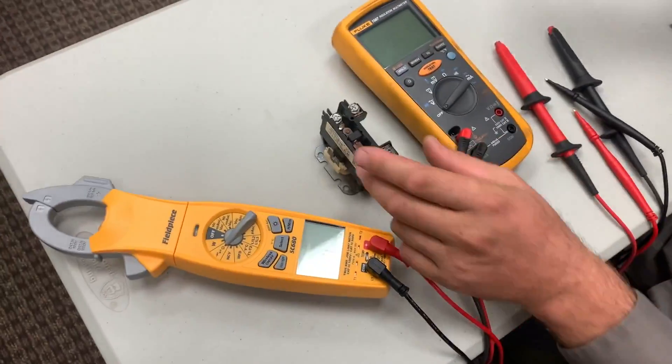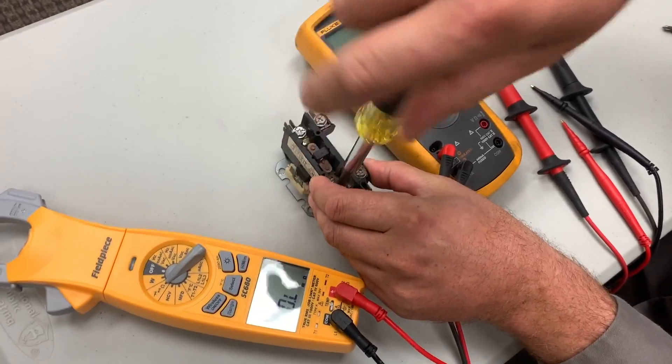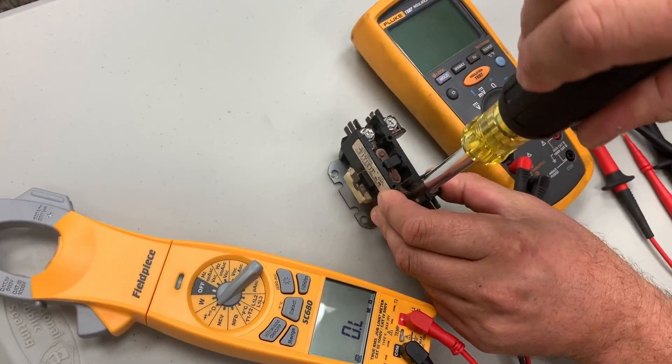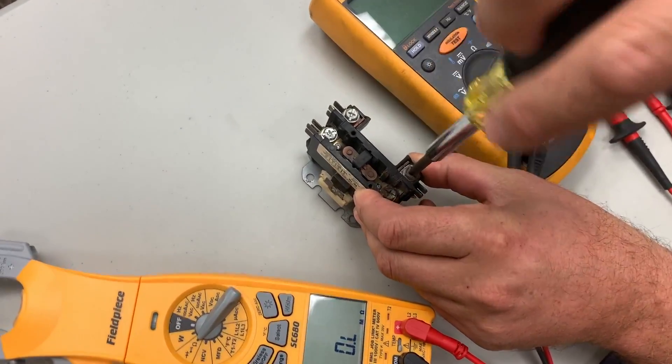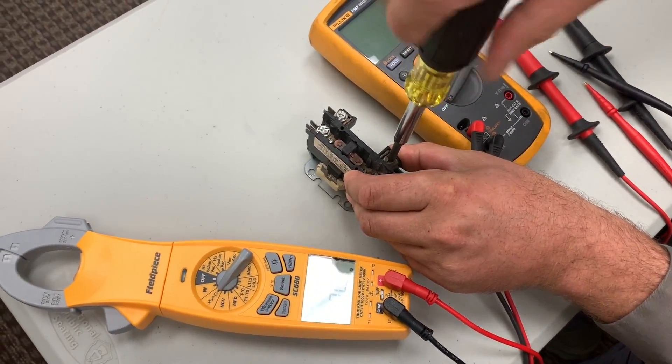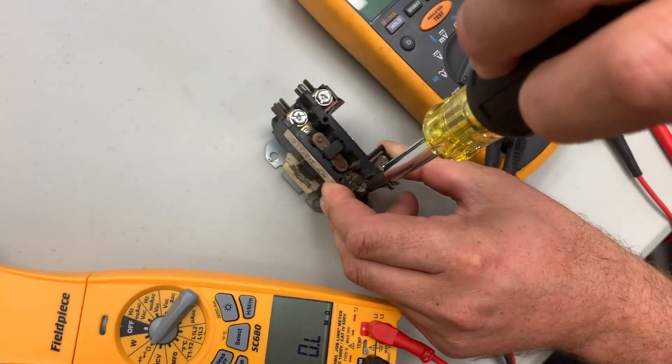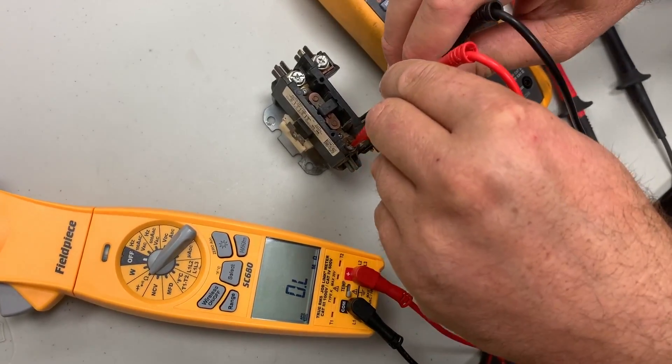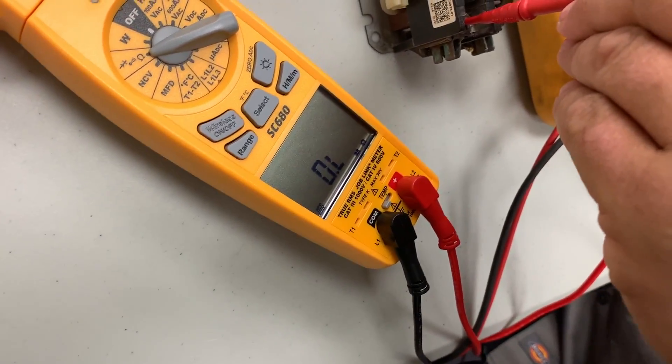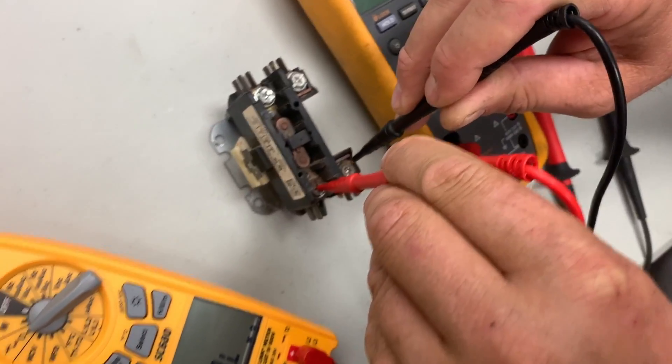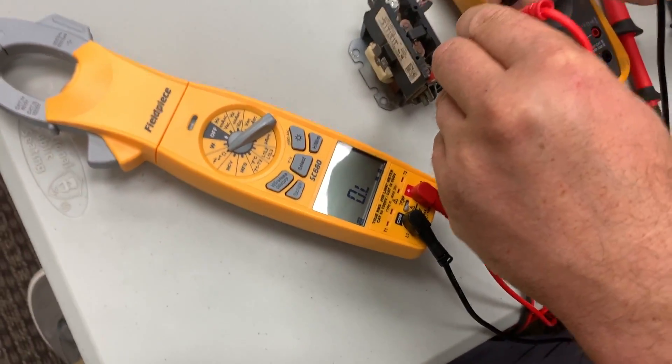But then we tighten the screws down like they would be when the system was in operation. Remember, this was an intermittent problem. We'd show up, breaker's tripped, we'd reset it, and we really couldn't figure out what was going on. Still not showing anything. Previously when we tightened it down we actually did, but we're not now.